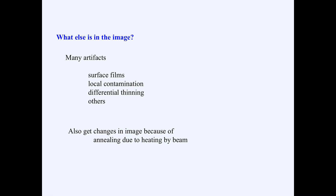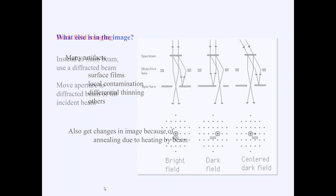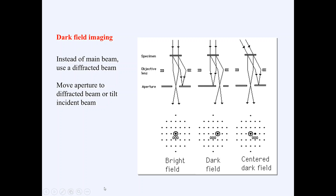There are also many other artifacts in TEM images, such as surface films, local contaminations, and differential thinning. Along with that, we can also get changes in the image due to annealing caused by heating from the electron beam. When we have diffraction from the electron beam, heat can be generated, causing some degree of annealing due to heating by the beam.